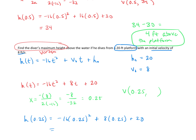We carefully type that into our calculators and get back 21. So the vertex is 0.25, 21. The diver started up on the platform, reached the maximum height at the vertex. The y value — 21 feet — gives us the actual height above the water. So the diver's maximum height is 21 feet above the water.